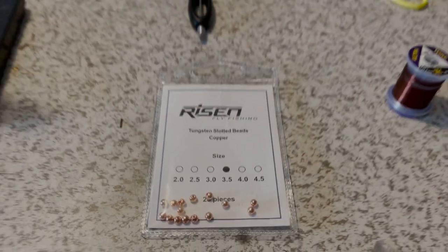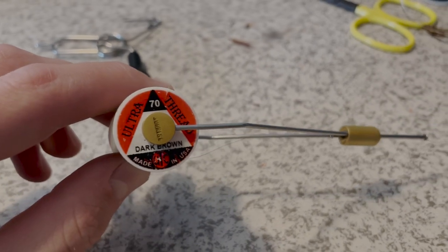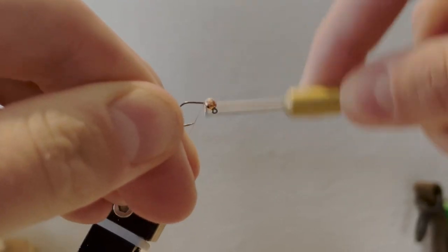For thread, we're using UTC 70 in brown. Just get that started right behind the bead. Snip off the extra.